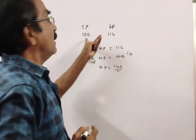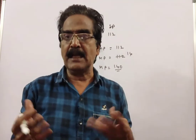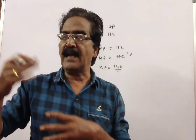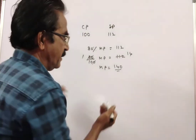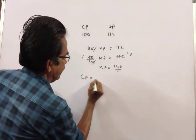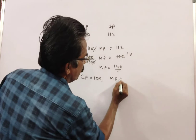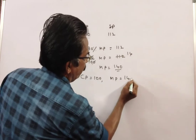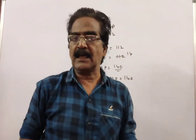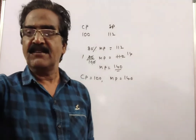Cost price is 100. So he must mark his goods 40% above the cost price. Because cost price is 100 and market price we got is 140, he should mark 40% above the cost price.